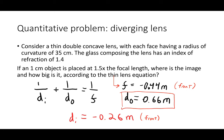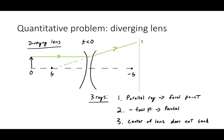A note on sign conventions: you can't place a real object at a negative object distance. The object distance for a real physical object must always be positive. So we can generally expect a virtual image on the same side of the lens as the object when using a diverging lens. The ray diagram is a useful tool for cross-checking the equation results.